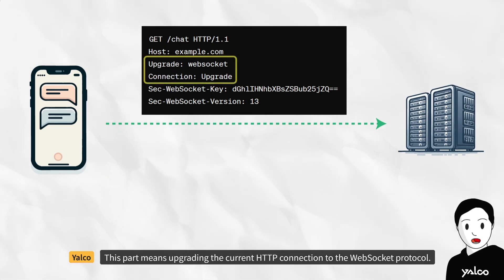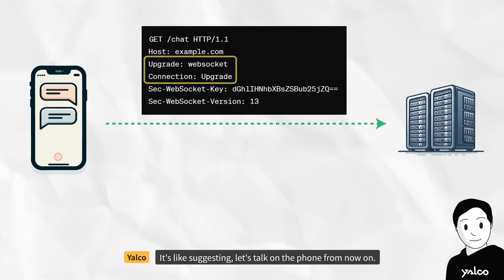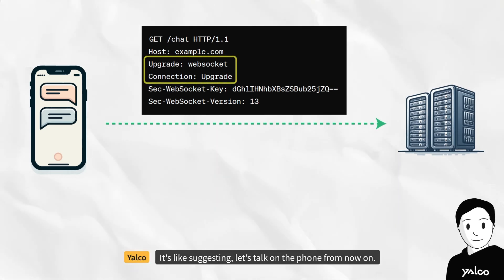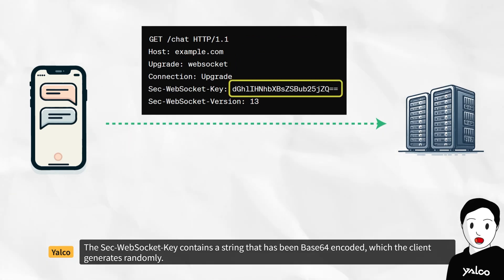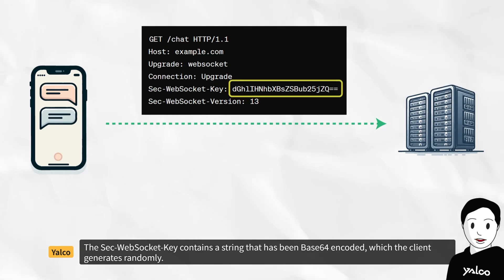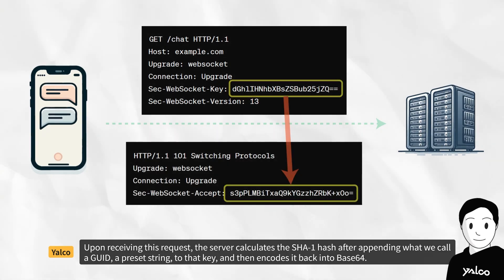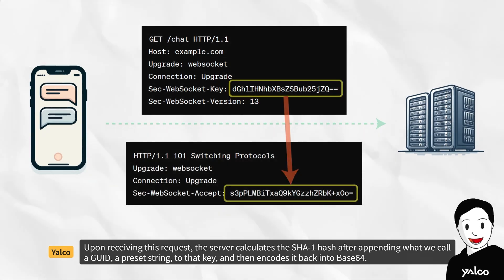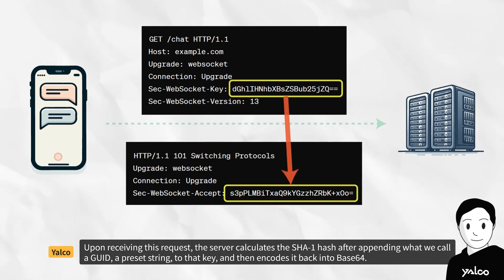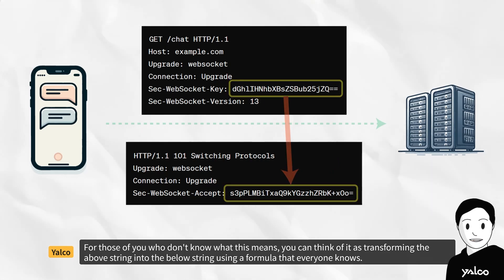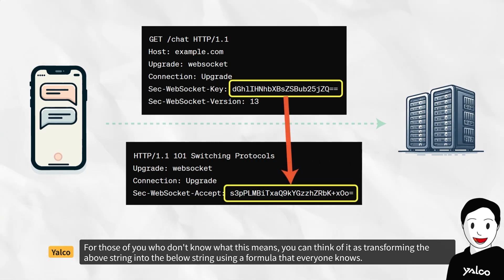This part of the header means upgrading the current HTTP connection to the WebSocket protocol — it's like suggesting, 'let's talk on the phone from now on.' The Sec-WebSocket-Key contains a string that has been base64 encoded, which the client generates randomly. Upon receiving this request, the server calculates the SHA1 hash after appending a GUID, a preset string, to that key, and then encodes it back into base64. You can think of it as transforming a string using a formula that everyone knows.